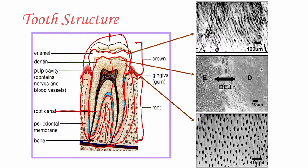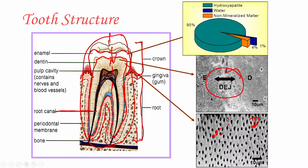If you take a cross-section and go down from enamel to dentine, you have the DEJ — the dental enamel junction — and then the dentine region. The microstructure nicely shows the dentinal tubules. These dentinal tubules are important because all these microstructural features give rise to specific mechanical properties.